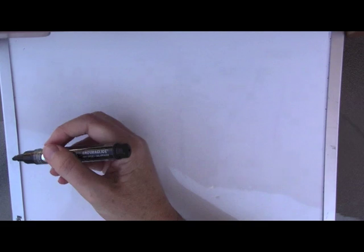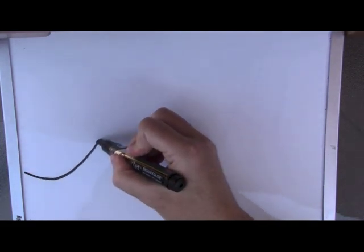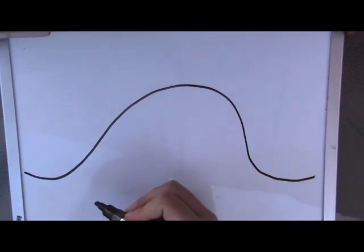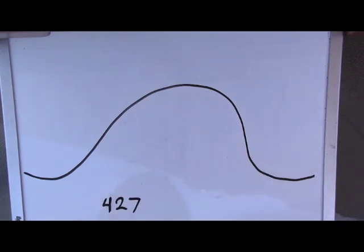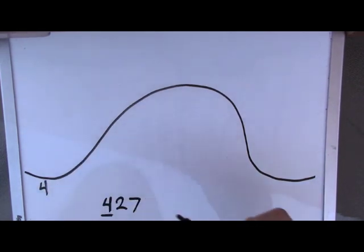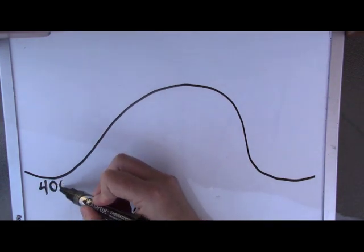Now what would happen if we wanted to round a larger number, like a number in the hundreds place? Let's do the number four hundred twenty-seven. So what we're going to do is underline the number in the hundreds place, which is a four. We'll write that here. There's one, two digits after that, so I'm going to do one, two zeros.